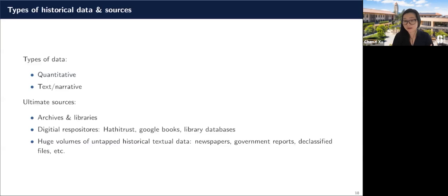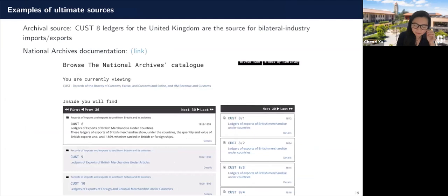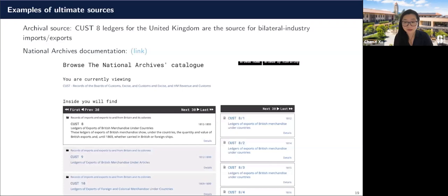Public resources like Google Books or HathiTrust have a huge volume of data that people for the most part haven't really used — newspapers, government reports, declassified files, etc. In my experience, archive catalogs are really good. This is an example of how you would go through, for instance, the National Archives catalog in the United Kingdom, where they're documenting exactly what you'll find in any given ledger or folder. In terms of searching, it's not that difficult, and you don't even need to go there to use this interface and figure out what they have.